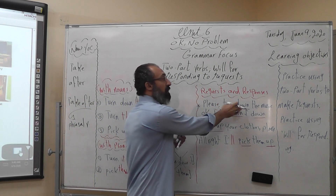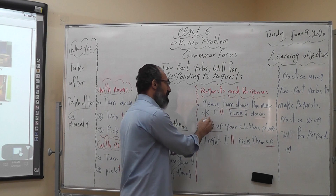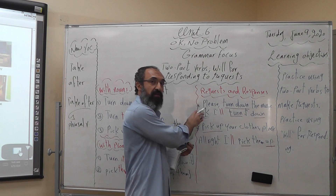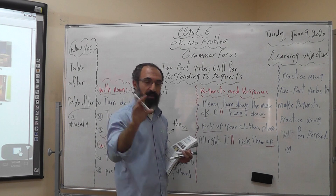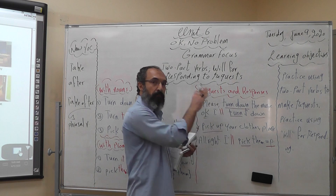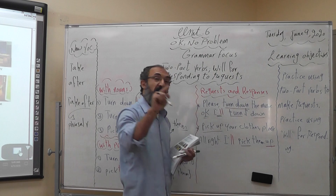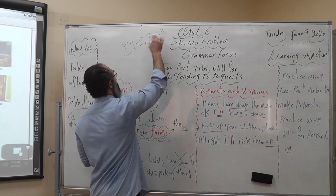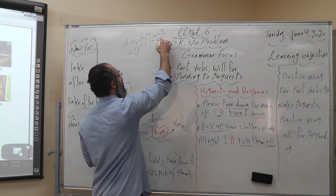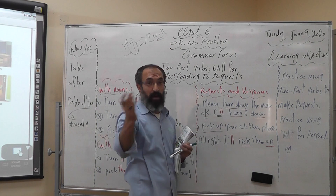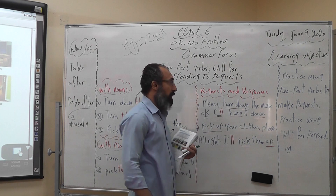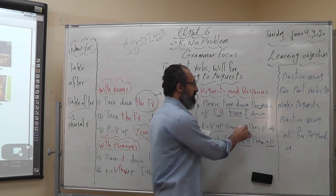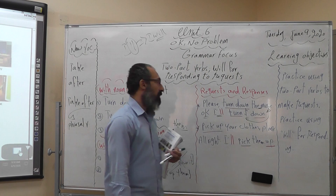When I say 'turn down the music', the response can be 'Okay, I will turn it down.' Notice that 'it' is used as the pronoun referring to 'music', which is a singular noun. The pronoun 'it' must come between the main verb 'turn' and the adverb 'down' — we say 'turn it down', not 'turn down it'.